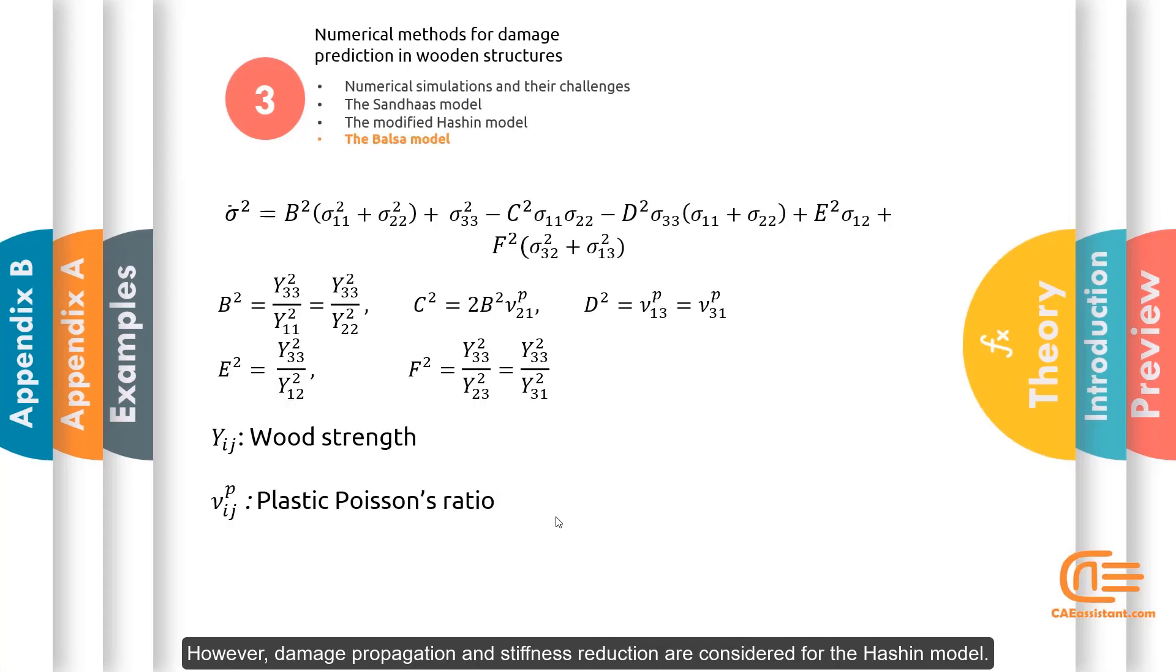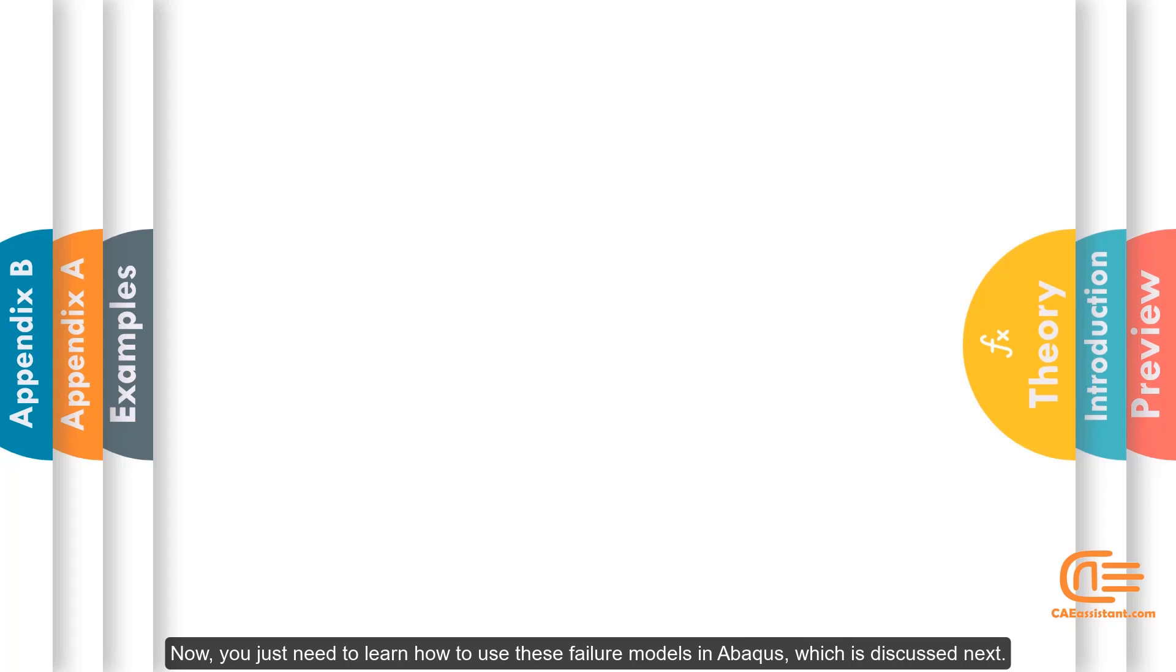However, damage propagation and stiffness reduction are considered for the Hashin model. Now you just need to learn how to use these failure models in Abaqus, which is discussed next.